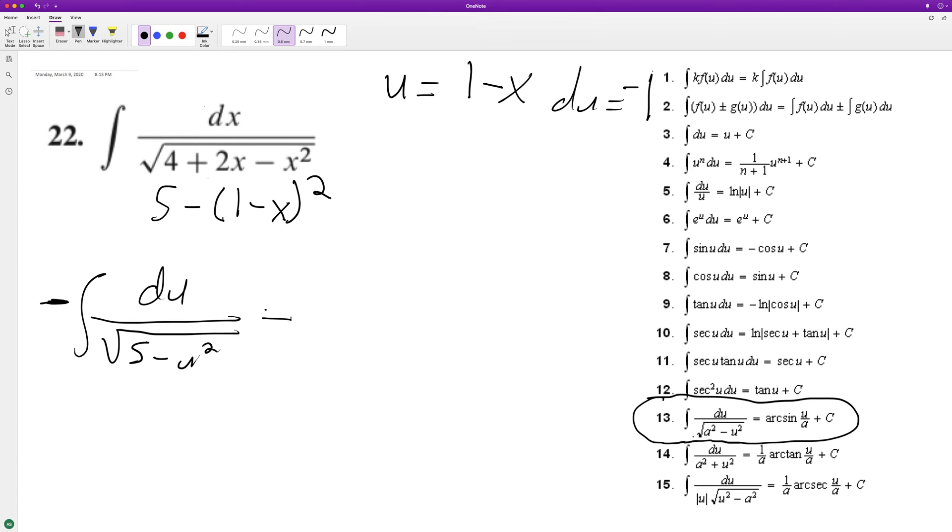And then we're going to get negative when we integrate inverse sine of u over a, which is square root of five, because this is in the a squared form.